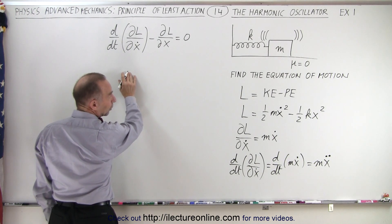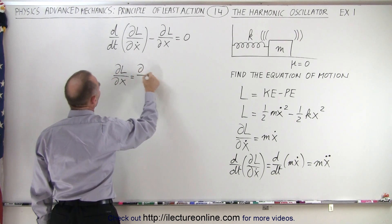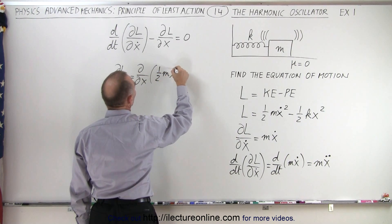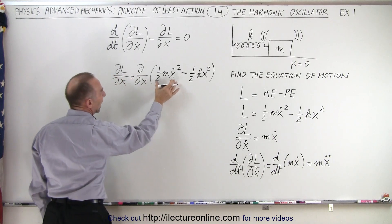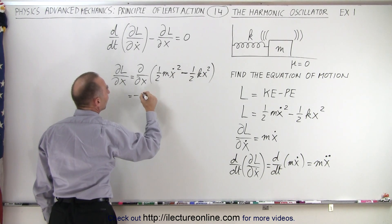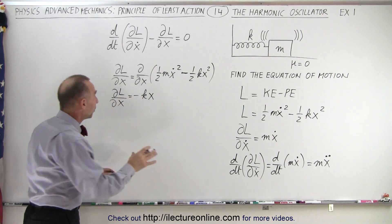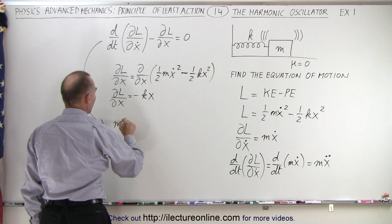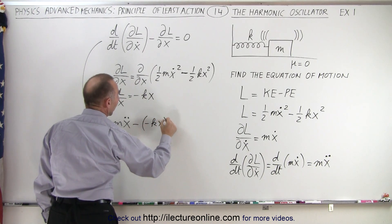Next, we take the partial of L with respect to x. So this is the partial with respect to x of one-half m x-dot squared minus one-half kx squared. There's no x in the kinetic energy term, so that drops out, and the potential energy term gives us minus one times kx to the first power. So the partial of L with respect to x is minus kx.